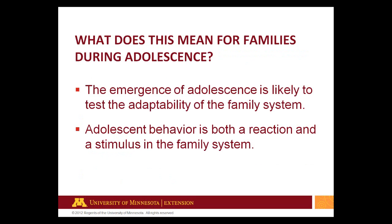So what does this mean for families during adolescence? The first two premises of family systems theory are particularly important here. The emergence of adolescence is one stage in the life cycle that's likely to test the adaptability of the family system. Adolescents are changing quickly and frequently, making it more difficult for the family system to adapt. Increasing participation with the environment outside the family system allows adolescents to introduce new experiences and stressors to the family.